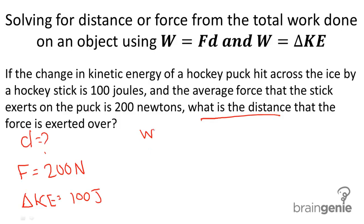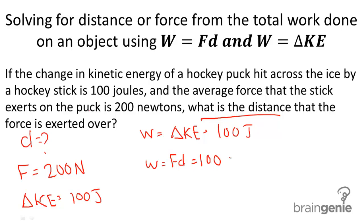From the work-energy theorem, work equals delta KE, and we know that delta KE is 100 joules. Work is also equal to FD cos theta, but we can ignore cos theta here since we're not given any angle information. So FD is also going to equal 100, and that's equal to the force, which is 200, times the distance, which is unknown. When we solve for distance, we get a distance of 0.5 meters for a final answer.